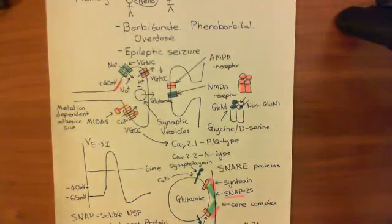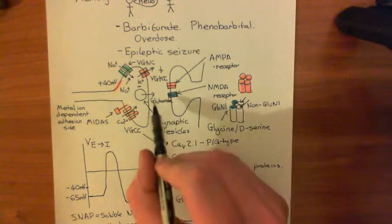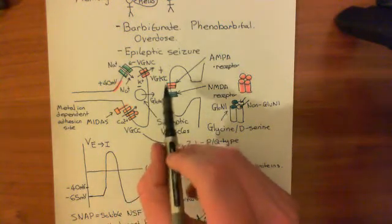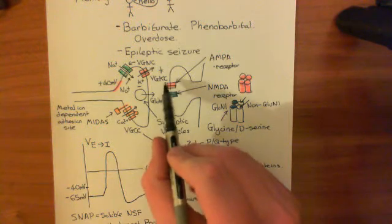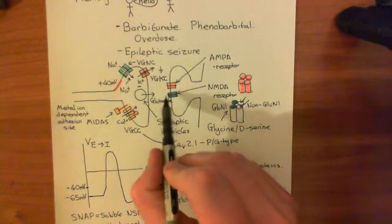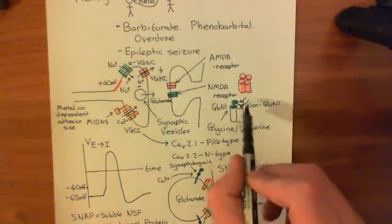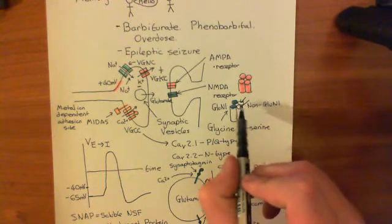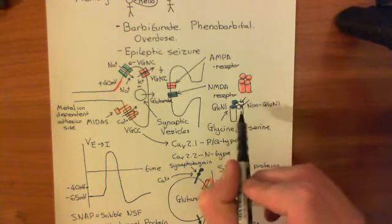Now we're getting into the meat of this. When glutamate diffuses across the synaptic cleft, four glutamate molecules are going to bind to this AMPA receptor, and two glutamate molecules are going to bind to the two non-GluN1 subunits of the NMDA receptor.